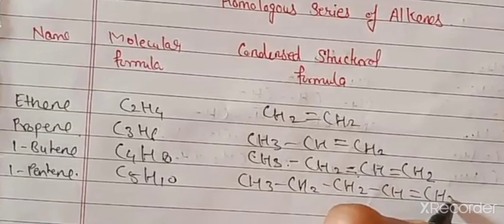Homologous series of alkenes. Saturated hydrocarbons have single bonds; alkenes have one double bond; alkynes have more than two double bonds — that is, triple bonds. In alkenes, there is only one double bond. The methane molecule has only one carbon, so it does not possess any alkene structure.